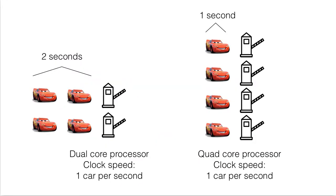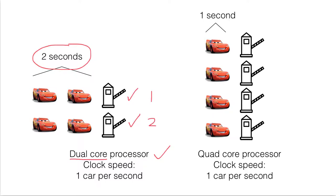Increasing the clock speed of a CPU is only one of the ways to improve its performance. We can also increase the number of cores in the processor — that means increase the number of CPUs in the processor. Let's say this is a dual-core processor, meaning we increase from one tow to two tows. Therefore, we need only two seconds to process the program, because we have two tows, two CPUs.